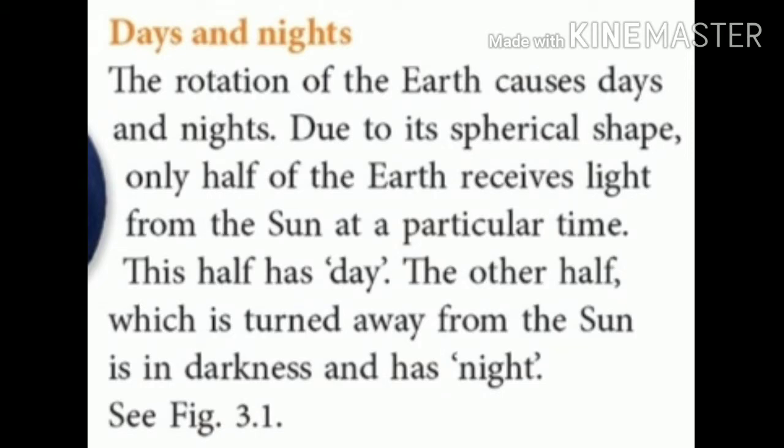Days and Nights: The rotation of the Earth causes days and nights. Due to its spherical shape, only half of the Earth receives light from the Sun at a particular time. This half has day. The other half, which is turned away from the Sun, is in darkness and has night.